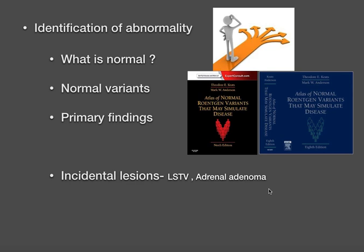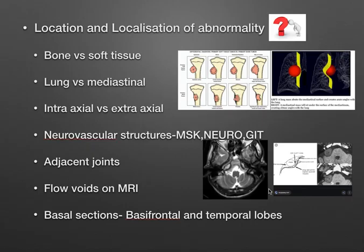Once you find an abnormality, look at the primary findings — what is the main finding — then look at surrounding structures and other organ involvement, and finally look for incidental lesions. For example, lumbosacral transitional vertebrae may be seen in a routine CT abdomen, and adrenal adenomas are often incidentally found that are unrelated to the primary disease.